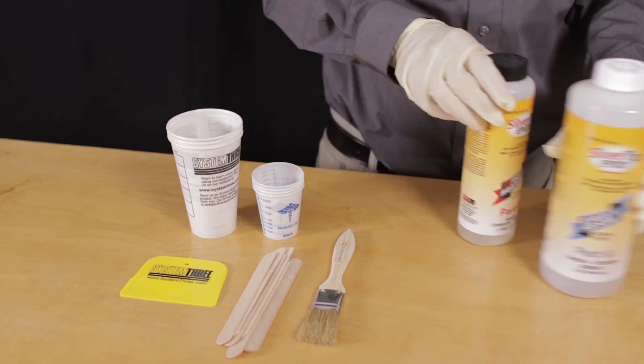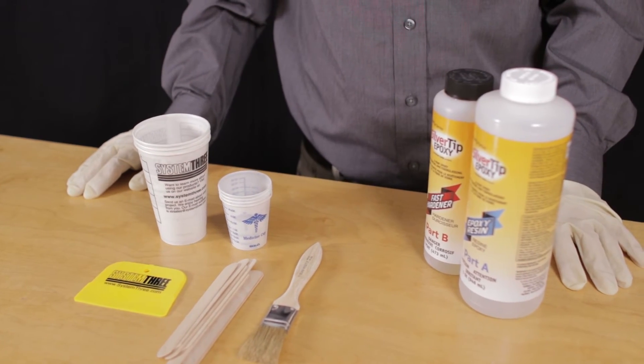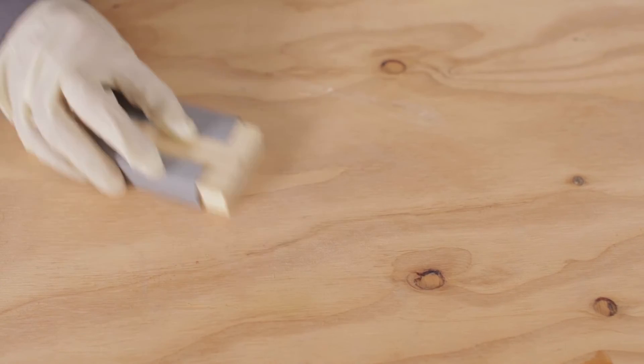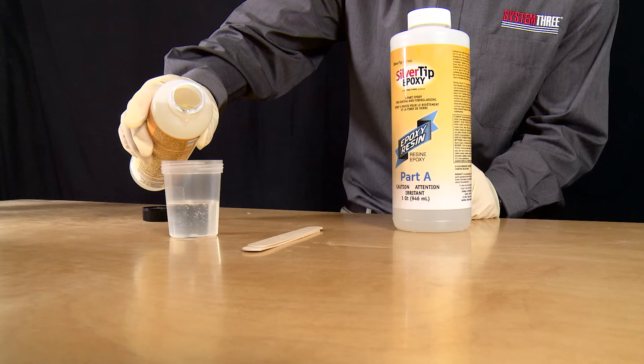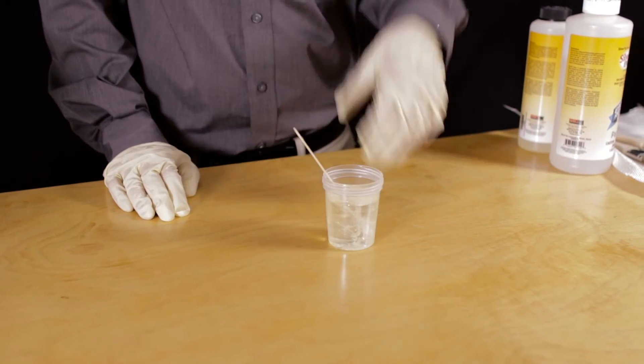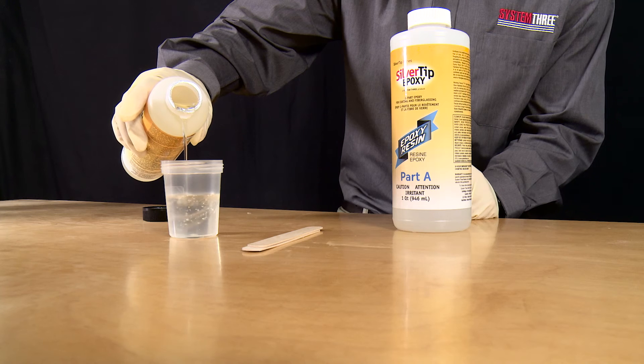Step two is to sand or chemically prepare any surfaces that need it for good adhesion. Step three is to execute—move swiftly and efficiently through your project, which should be easy since you've gotten organized beforehand. Keep in mind the epoxy does get hot in the cup, so only prepare and mix what you can suitably use in five to ten minutes.